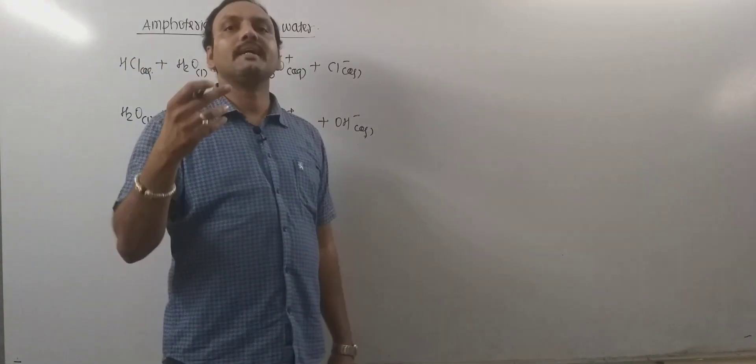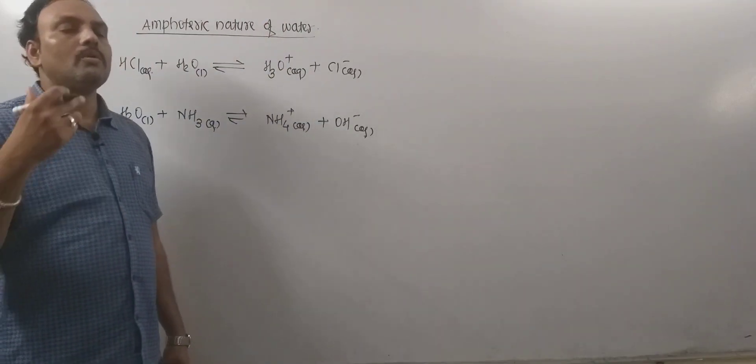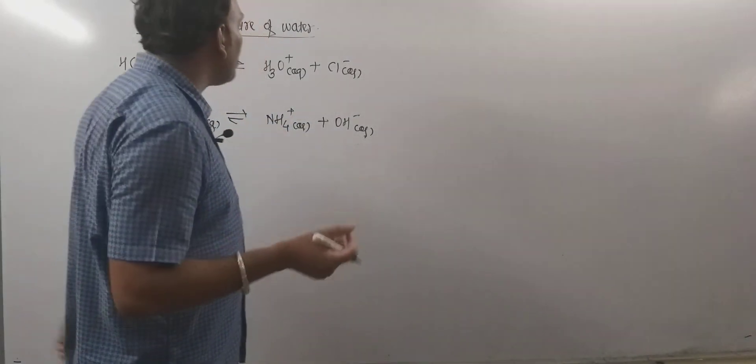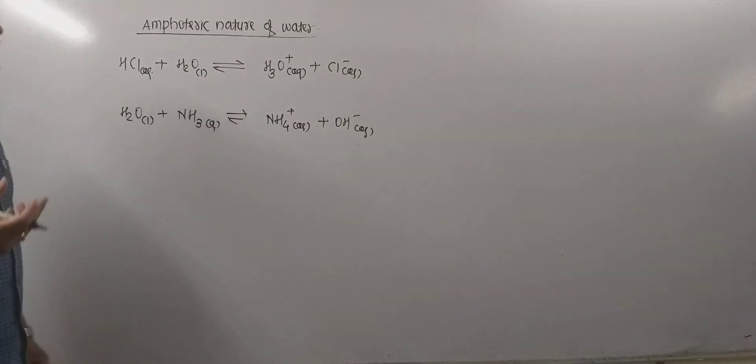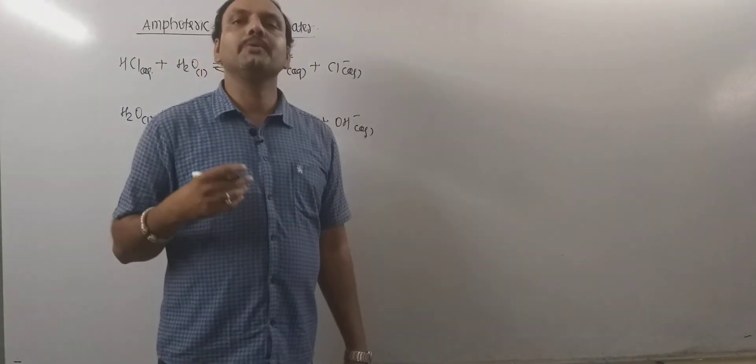Hence, water is said to be amphoteric substance. Hereby, using Bronsted-Lowry theory, one can explain the amphoteric nature of water. Thank you very much.